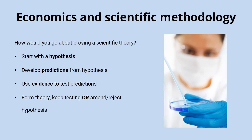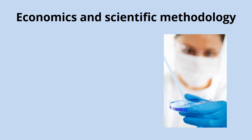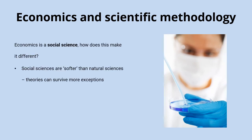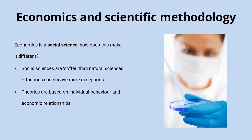So what's all of this got to do with economics? Well, economics is what we call a social science, and that makes it different to a natural science because it's softer than natural sciences. That means theories made in economics can survive a lot more exceptions, because they're based on individual behaviour and the relationships between people, so those theories have to be softer — otherwise you wouldn't really be able to make any.